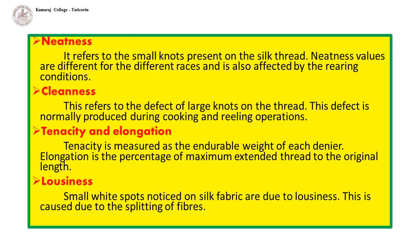Neatness refers to the small knots present on the silk thread. Neatness values differ among races and are also affected by rearing conditions. Cleanness refers to the defect of large knots on the thread; this defect is normally produced during cooking and reeling operations.